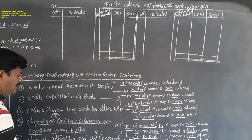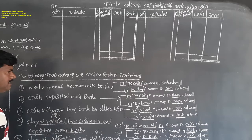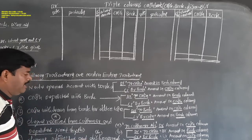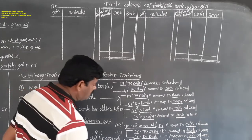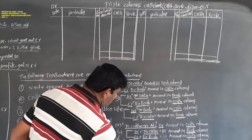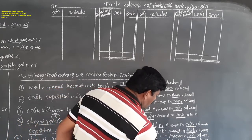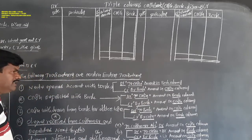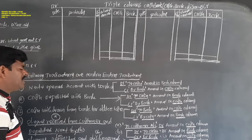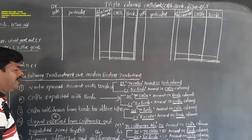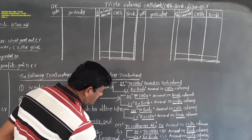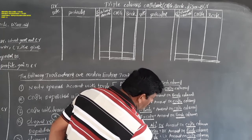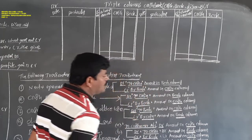For cheque deposited and dishonored: suppose the cheque is deposited on 10th January and dishonored on 17th January. When depositing, write 'To Customer Account' with the amount in the bank column. When the cheque is dishonored on that day, record on the credit side as 'By Customer Account' with the amount in the bank column. This is also a contra entry.